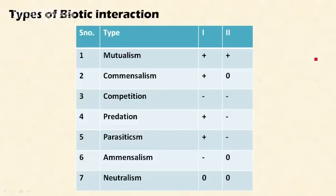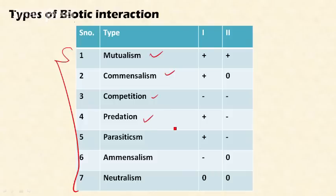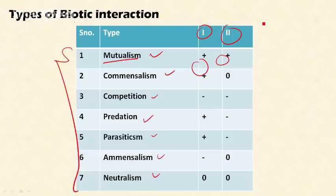There are different interactions between organisms in an ecosystem, called biotic interactions. Organisms can interact in various ways. There are seven broad ways: mutualism, commensalism, competition, predation, parasitism, amensalism, and neutralism. In mutualism, both species are benefited. In commensalism, one species is benefited and the other is unaffected. In competition, both species are at a disadvantage.